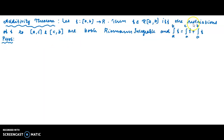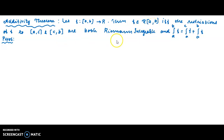Into the proof of the theorem. First, we assume that the restrictions of f to [a, c] and [c, b] are both Riemann integrable, and then we prove that f is Riemann integrable on [a, b]. Then we assume that f is Riemann integrable on [a, b] and prove the restrictions are Riemann integrable.